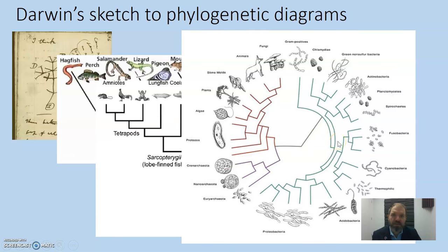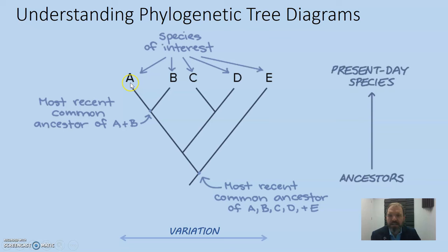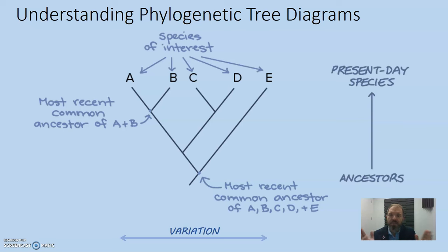Here are different types of phylogenetic tree diagrams that you need to be able to recognise and work with. On the tips we have species that exist currently; going back in time we have the ancestors of those present-day species. So A and B are related species with a common ancestor at this point, A and C have a common ancestor further back, and A, B, C, and D all share a common ancestor here. As we look across, we see variation arising over time and can trace back to common ancestors.